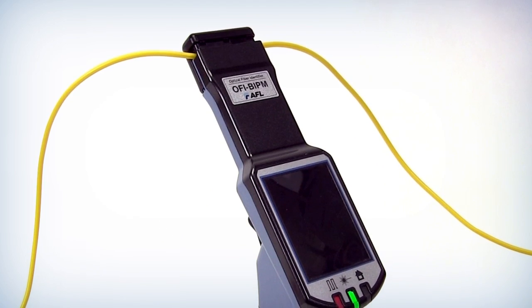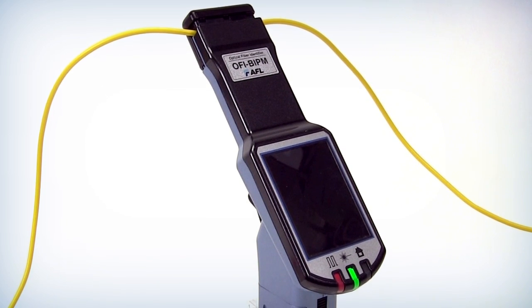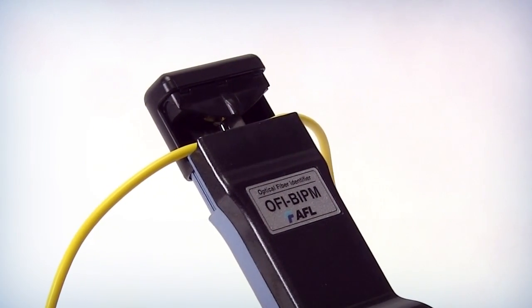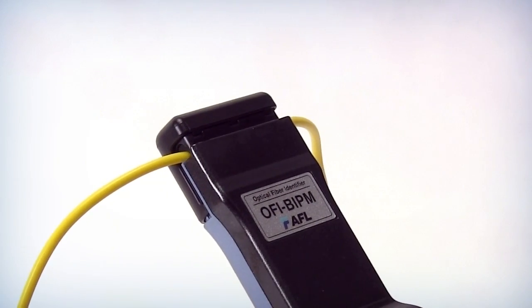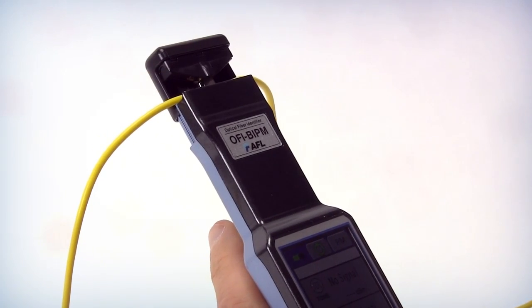Testing should be performed on a fiber at a distance of 6 to 18 inches from the connection point. Limit the time the fiber is under test. Clamp the OFI-BIPM on, read the results, and then quickly release and remove the OFI-BIPM.